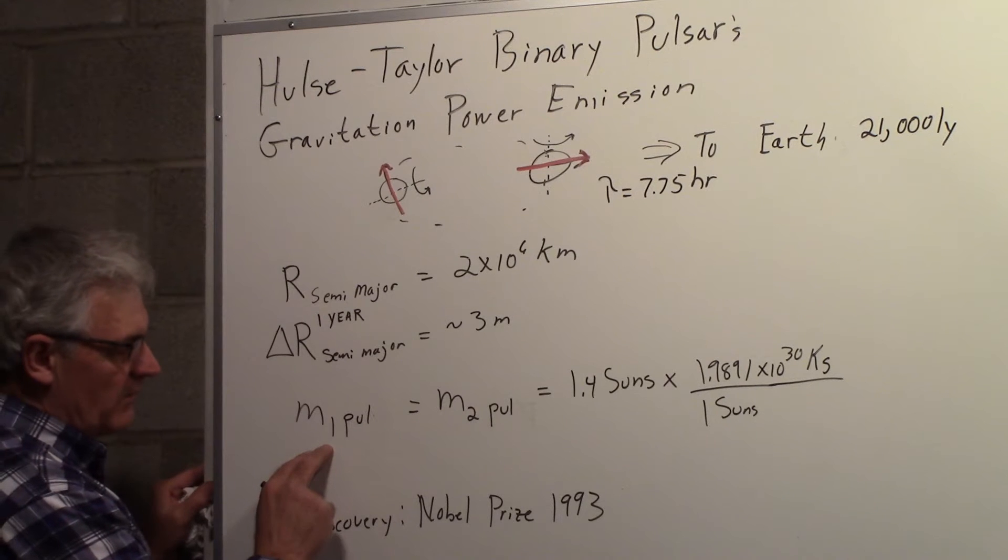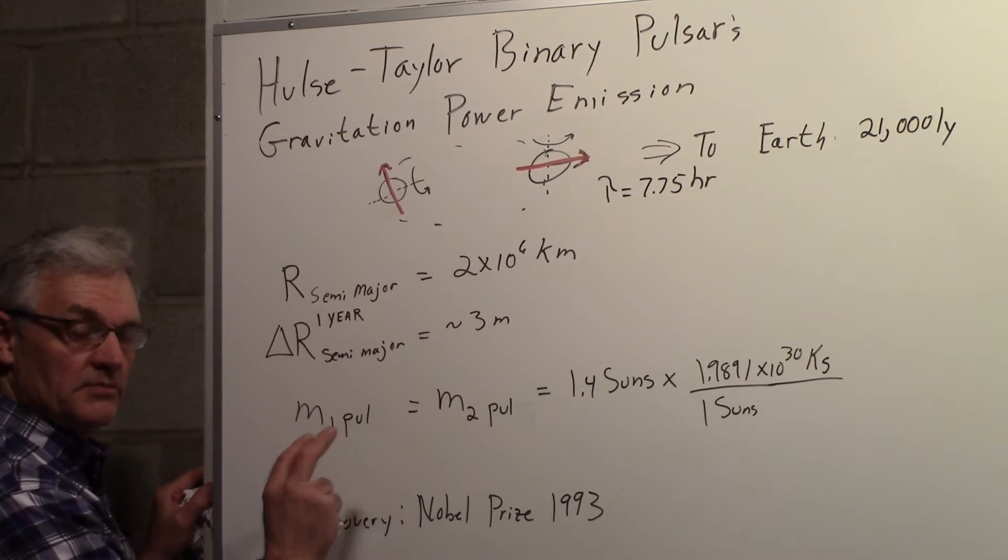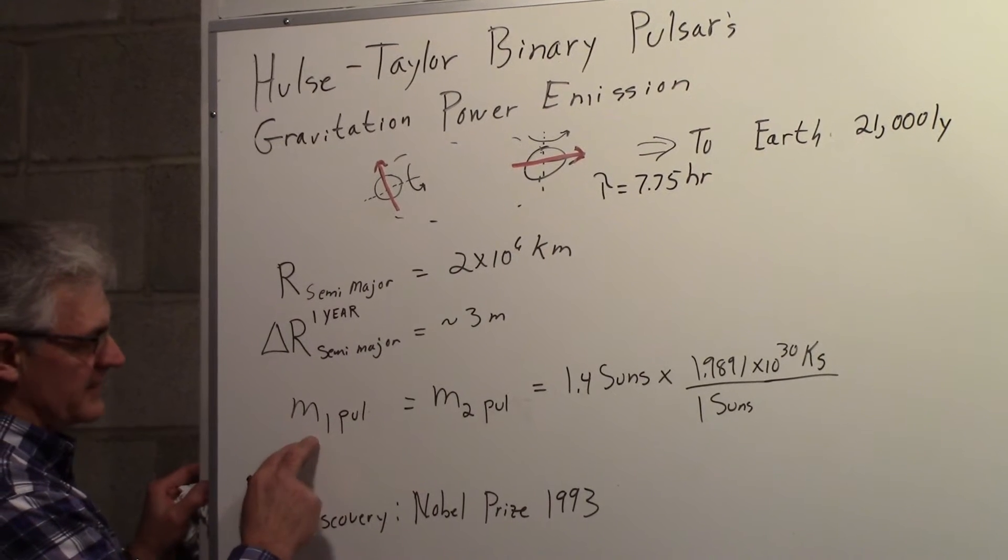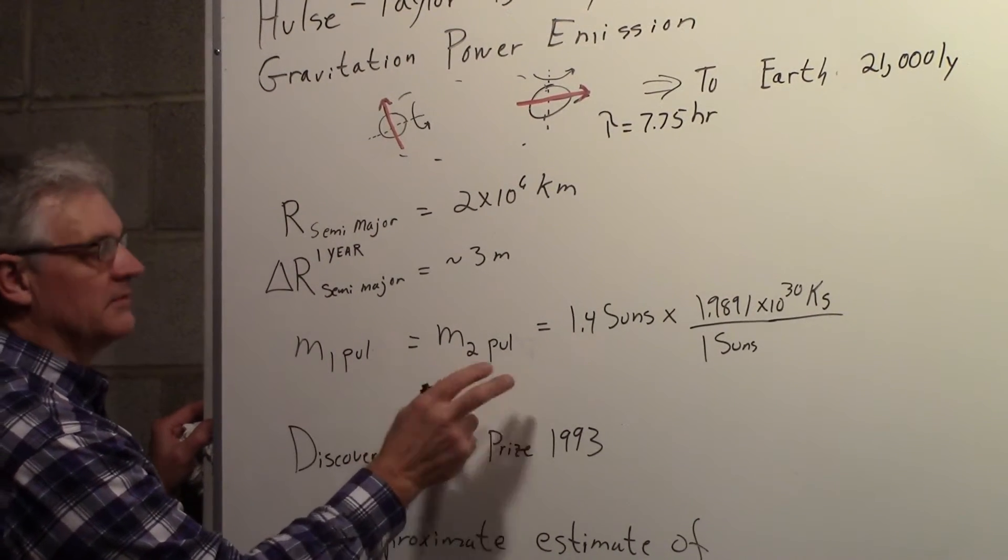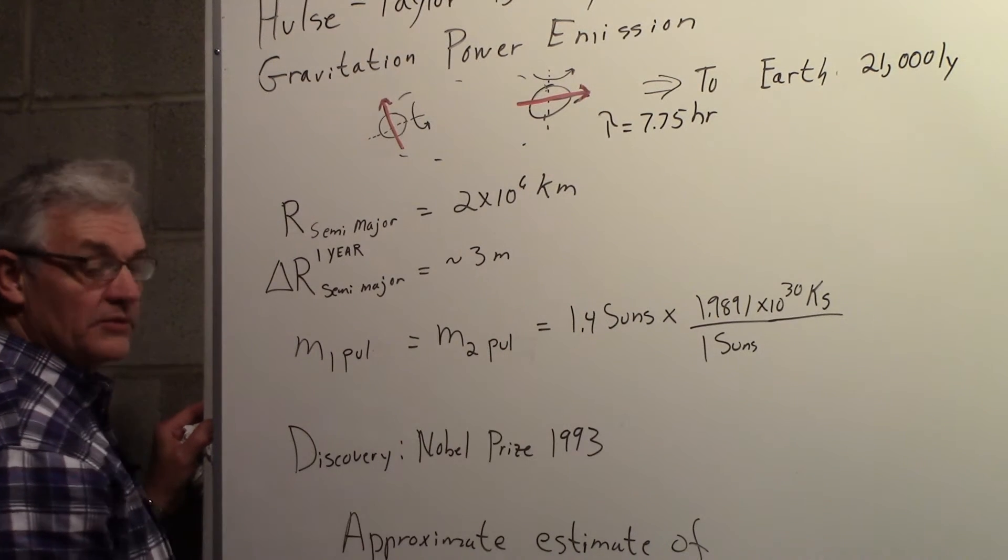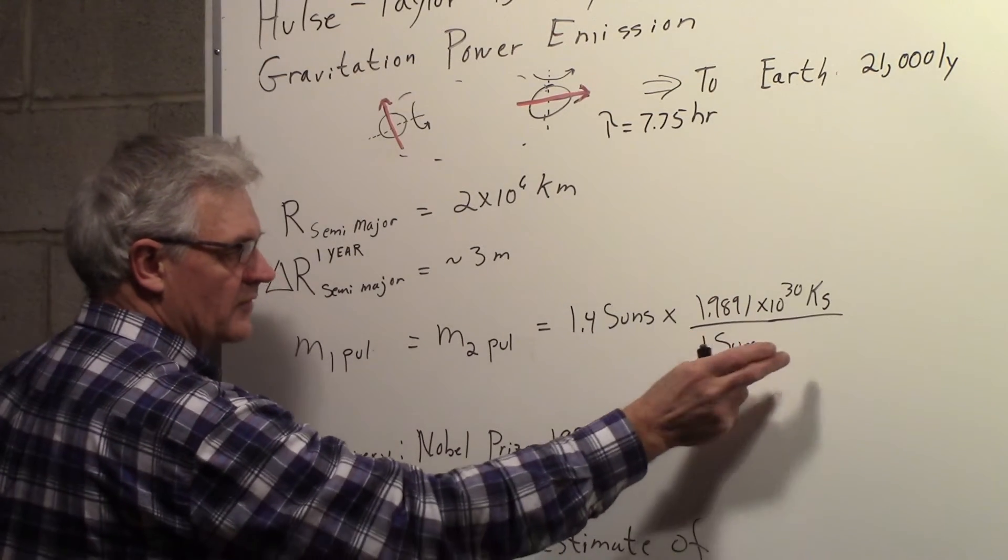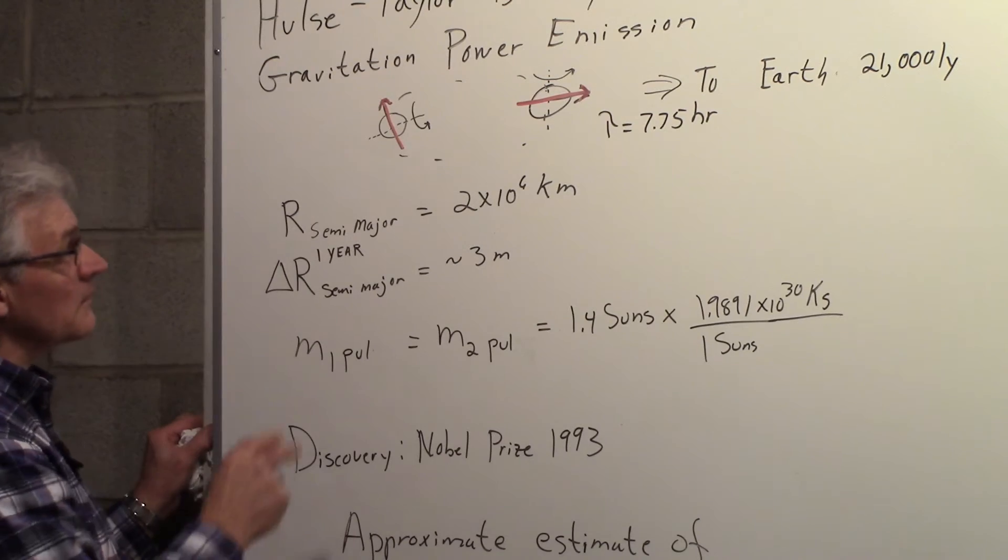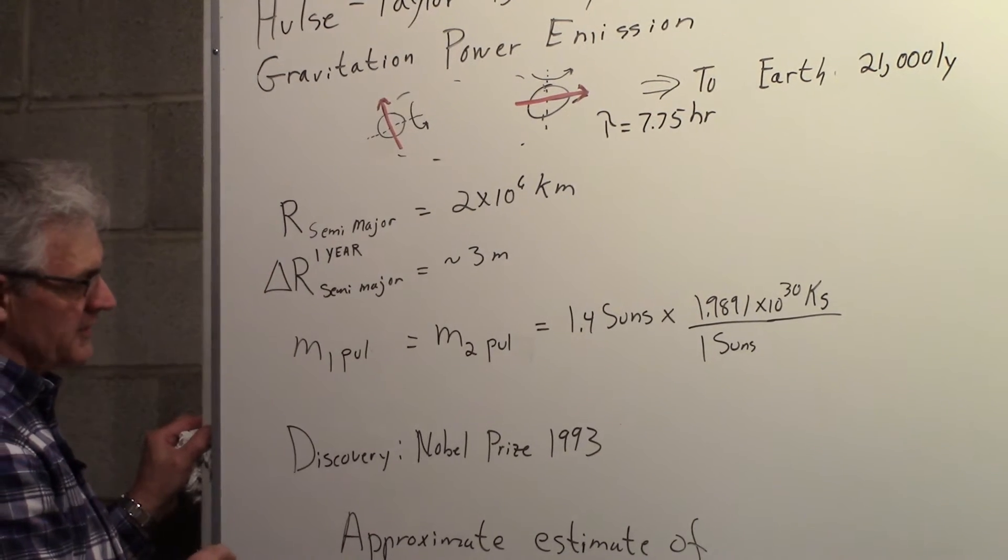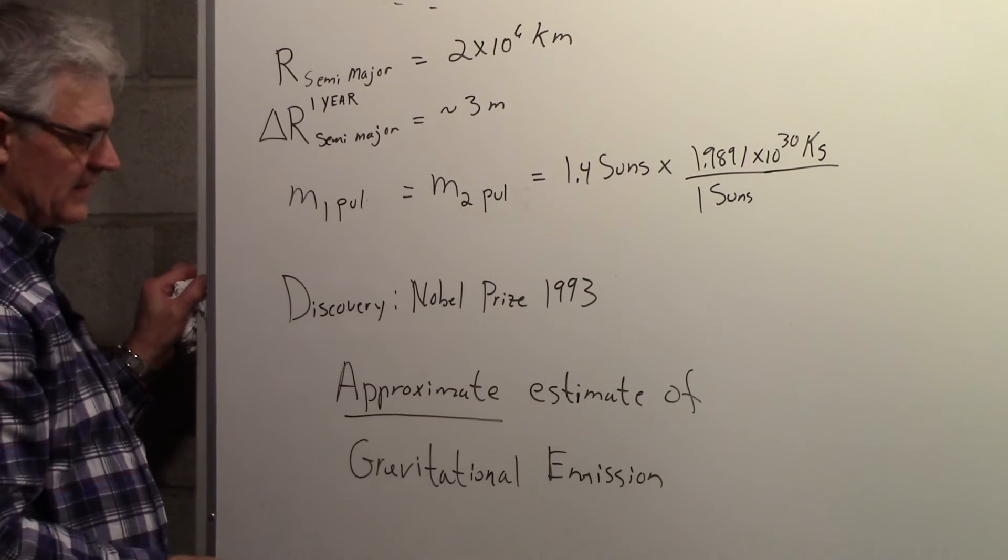And the masses of the two pulsars are equal. So we can have the mass of pulsar 1, mass of pulsar 2, they're equal and they're approximately equal to the mass of 1.4 suns. And so you can convert the 1.4 suns to kilograms. We'll need that number later. The discovery by Hulse and Taylor of these orbiting pulsars won them the Nobel Prize in 1993.